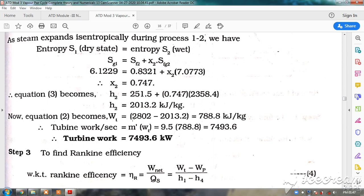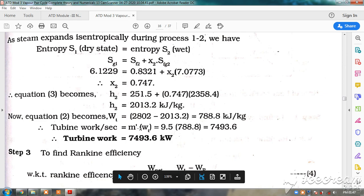Turbine work is 788 kilojoules whereas pump work is only 3.5, so pump work is very less and normally it is ignored. Now, turbine work per second is equal to the mass flow rate times turbine work.